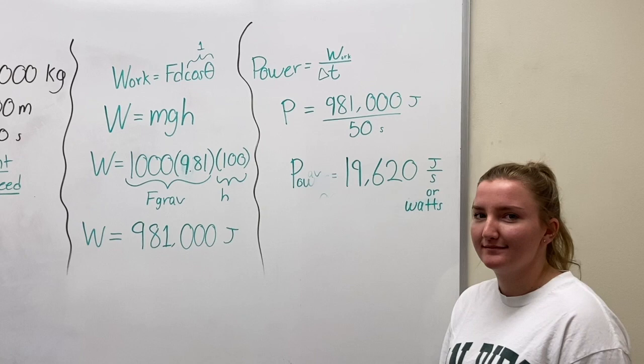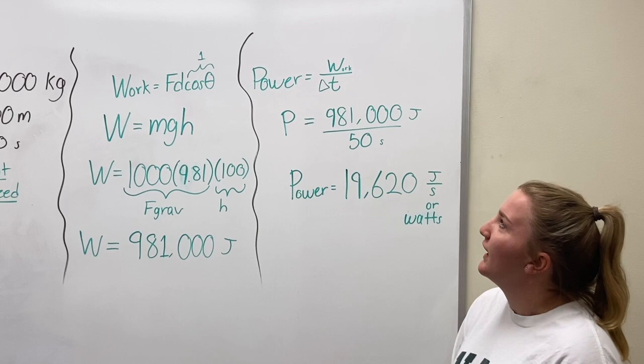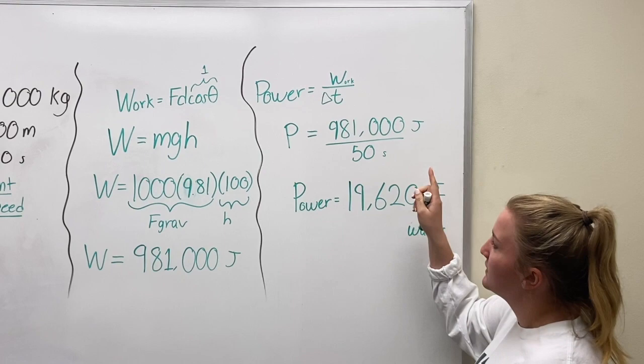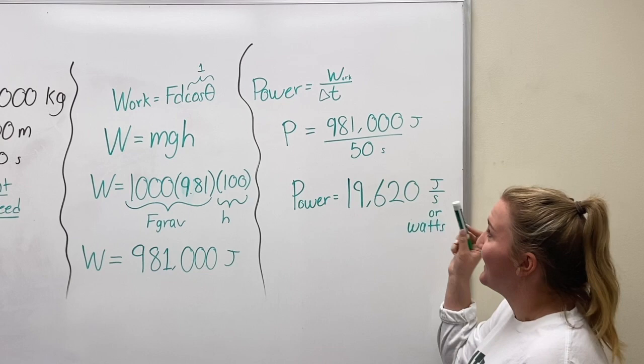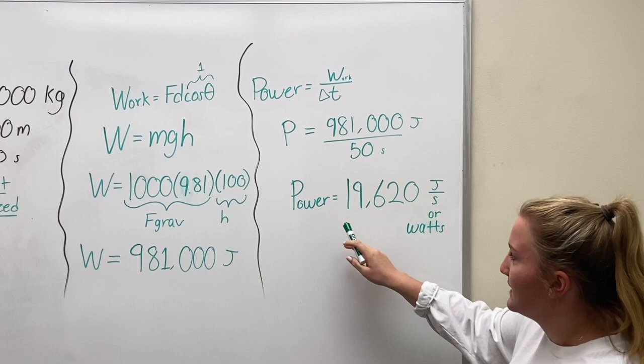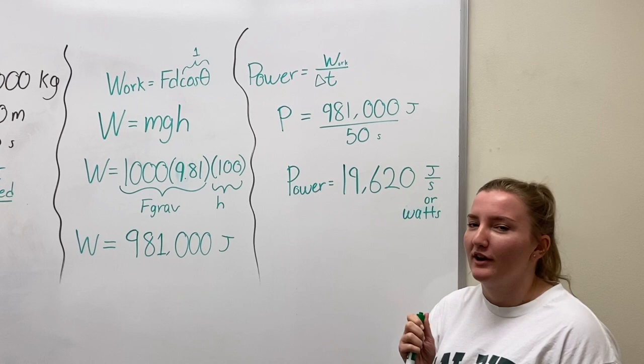So for this step of the problem, we had to find the power that was exerted by the motor. To do this, the equation for power is work over the change in time. So we used the answer that we got from the previous step, which was 981,000 joules, and then we put it over the change in time. So we got the power was equal to 19,620 joules per second.